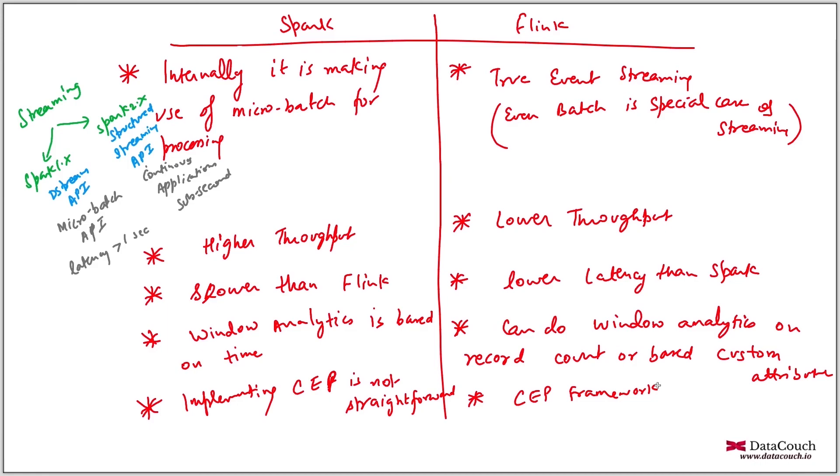Earlier, we were firing query over the data. Now data is going via the query to identify such patterns. That's why CEP is actually a very interesting feature which Flink provides. This is helpful in a lot of use cases that I just mentioned. Hope this gives you an idea of Spark versus Flink.